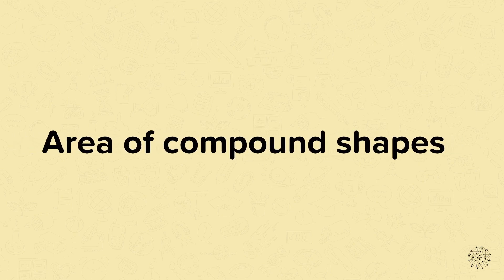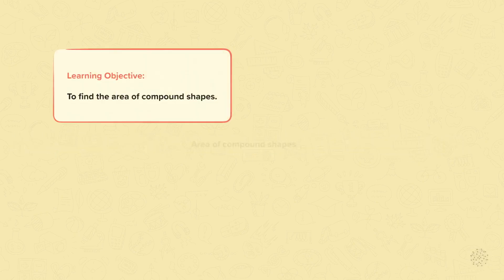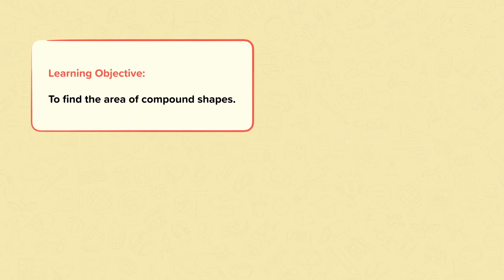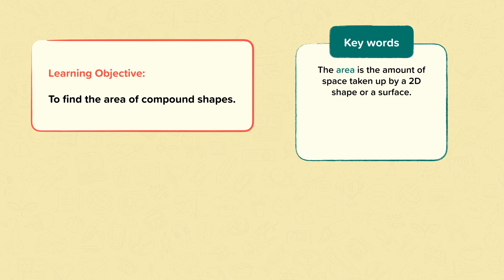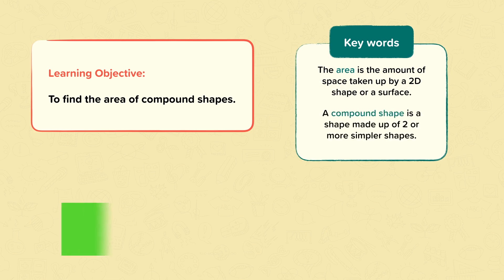Area of compound shapes. In this nugget we are learning to find the area of compound shapes. The area is the amount of space taken up by a 2D shape or surface. A compound shape is a shape made up of two or more simpler shapes.